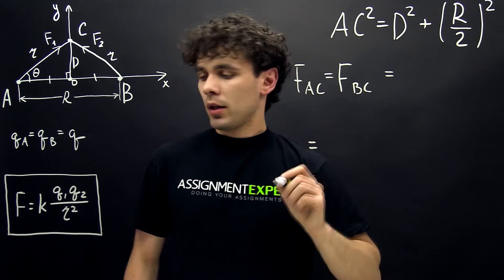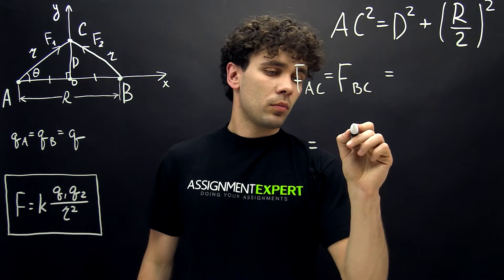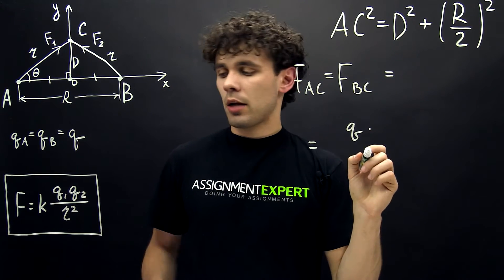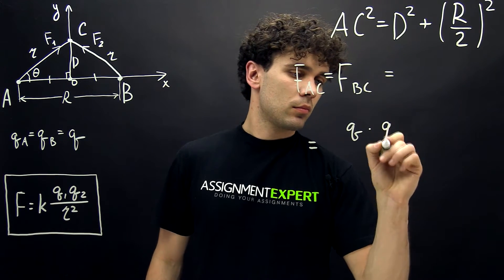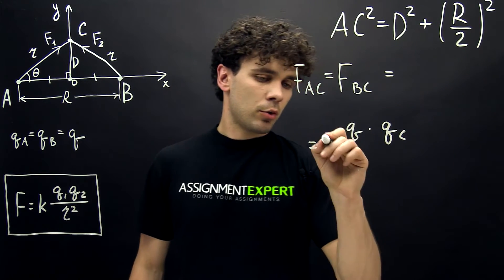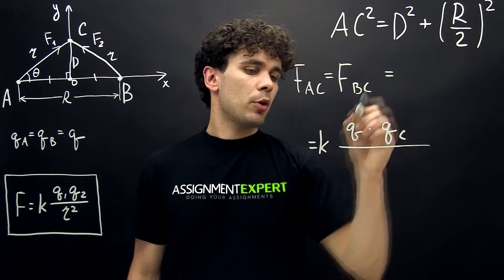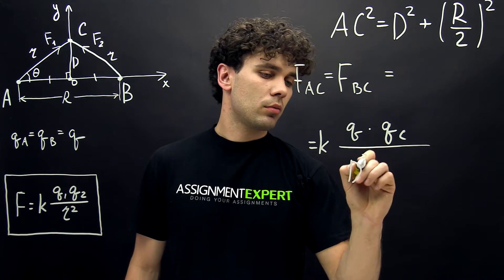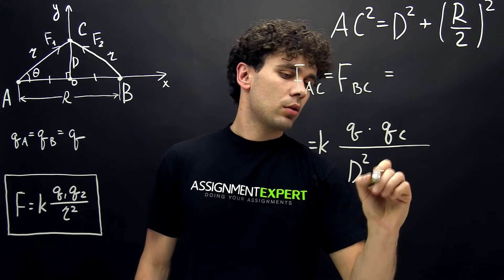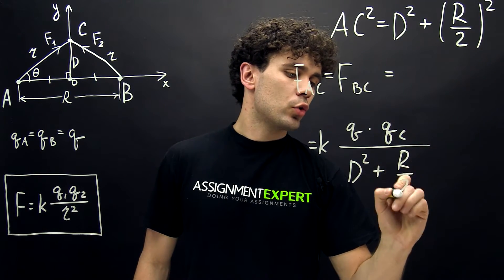We will have FAC equals FBC and equals K times Q times QC. In the denominator, we have D squared plus (R over 2) squared.